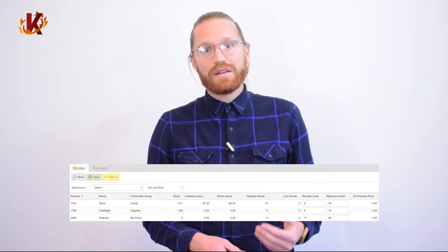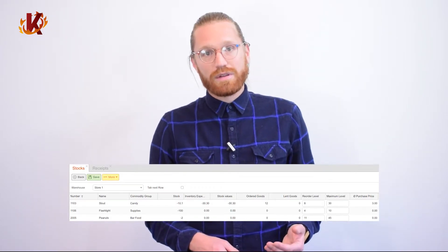Businesses can set minimum threshold levels so that the system will automatically place a purchase order when any product gets to a particular level. Corona comes with advanced features that analyze past sales based on a time period.